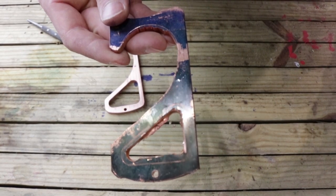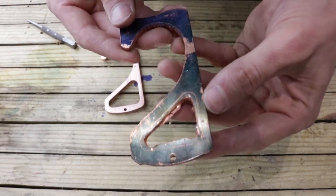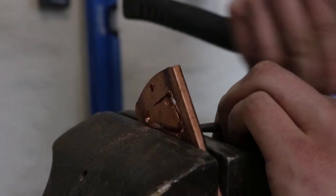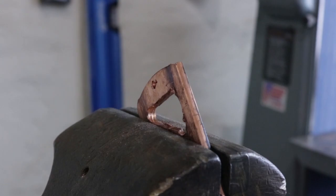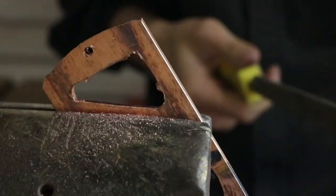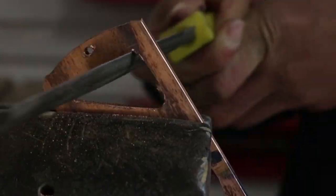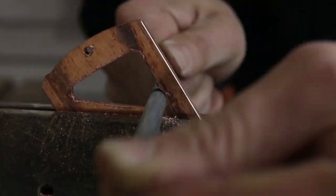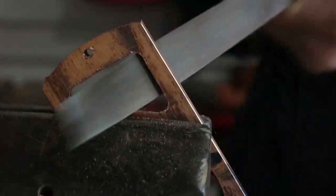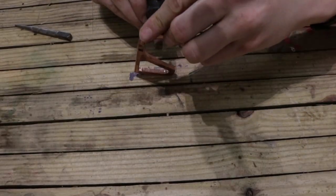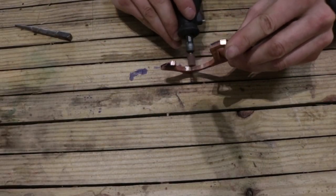This is where we are before we start filing down to the outline. You can see some places we have more material to remove than others. Now I'm just using a file and filing down to the lines that I scribed earlier. This is certainly going to be the most time-consuming portion of making Hook by Hand. The closer you cut to your lines that you scribed earlier, the less work you're going to have here.